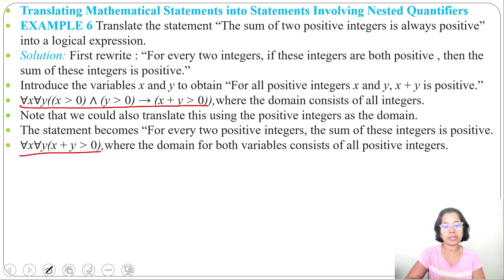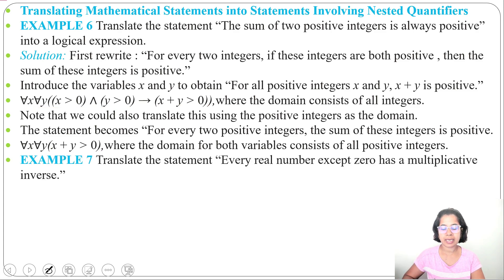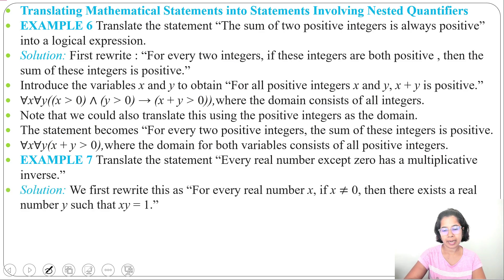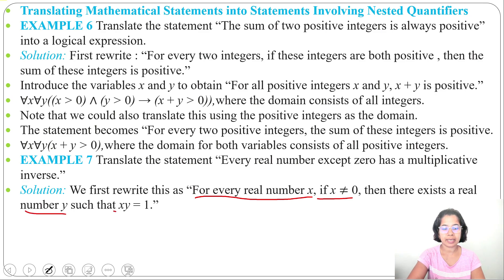Example 7: translate the statement 'every real number except 0 has a multiplicative inverse' into a logical expression. First we rewrite it as: for every x, there is a y such that x times y equals 1. So we can write: for every real number x, if x is not equal to 0, then there exists a real number y such that x times y equals 1.